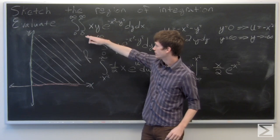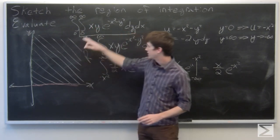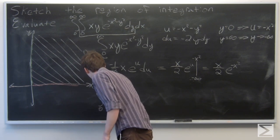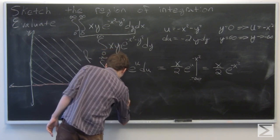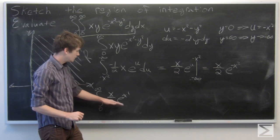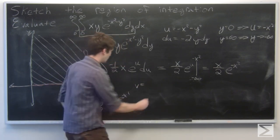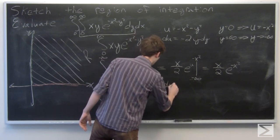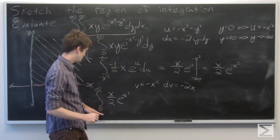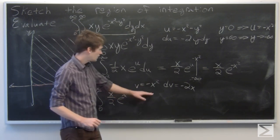Substituting into the outer integral, we get the integral from 0 to infinity of x over 2 times e to the negative x squared dx. We'll use v-substitution, letting v equal negative x squared, so dv equals negative 2x dx. When x equals 0, v equals 0; and as x goes to infinity, v goes to negative infinity.